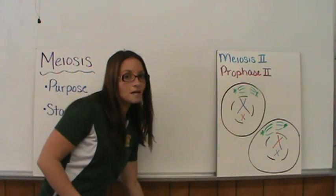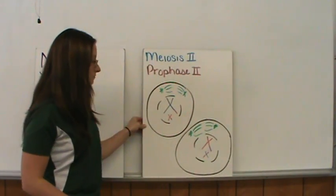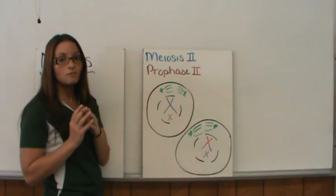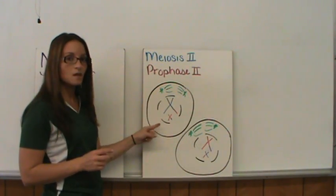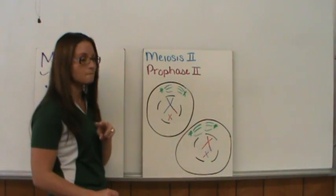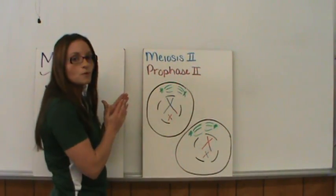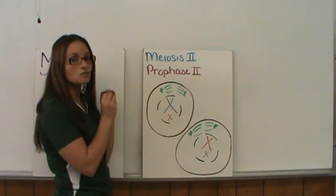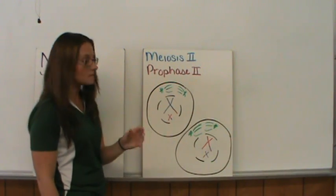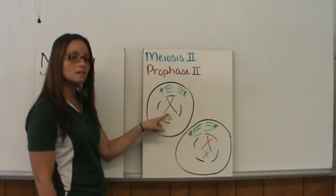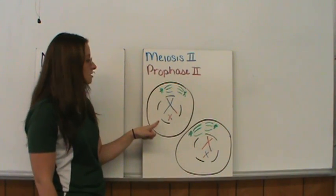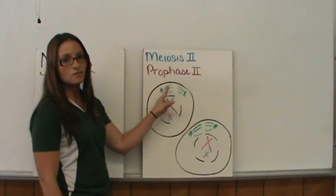Then we move on to meiosis II. We have our two cells that now each have two chromosomes instead of four, but they still have two chromatids — so that's still two copies of the DNA. In prophase II, the chromosomes are already condensed, the nucleus that formed in telophase is now going to dissolve, and the spindle fibers are going to reform.